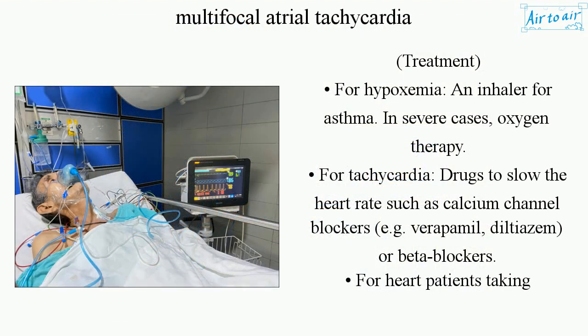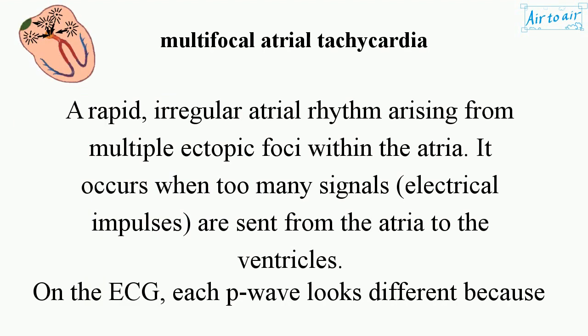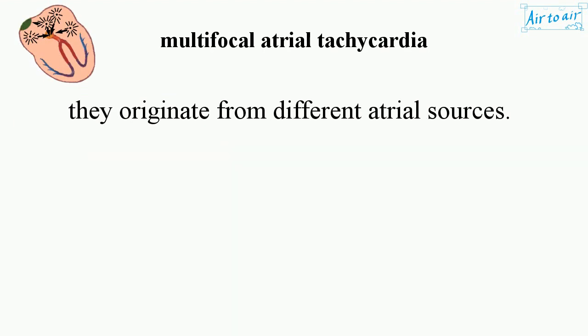Treatment: For hypoxemia, an inhaler for asthma or, in severe cases, oxygen therapy. For tachycardia, drugs to slow the heart rate such as calcium channel blockers (e.g., verapamil or diltiazem) or beta blockers. For heart patients taking diuretics, magnesium or potassium given intravenously replaces electrolytes lost by diuretics. For theophylline overdose, stop taking it and administer diltiazem.